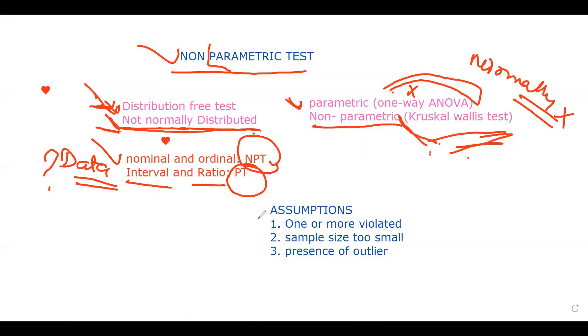There are other reasons also in which we will use a non-parametric test. First assumption is, if all the assumptions or one or more assumptions of a parametric test have been violated. Second, when your sample size is too small to run a parametric test. Third, your data has outlier that cannot be removed.